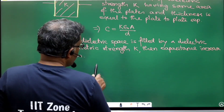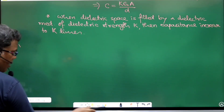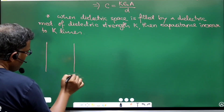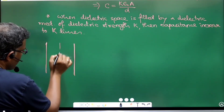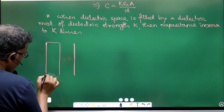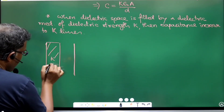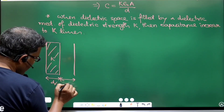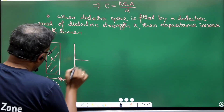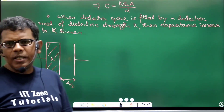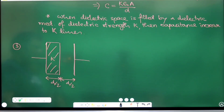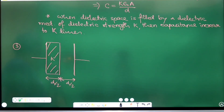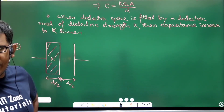Now consider the third case: when the entire dielectric space is not totally filled by one dielectric medium. Suppose half of the plate-to-plate separation (d/2) is filled with a dielectric of constant k, and the remaining d/2 is filled with air. What will be the effective capacitance?